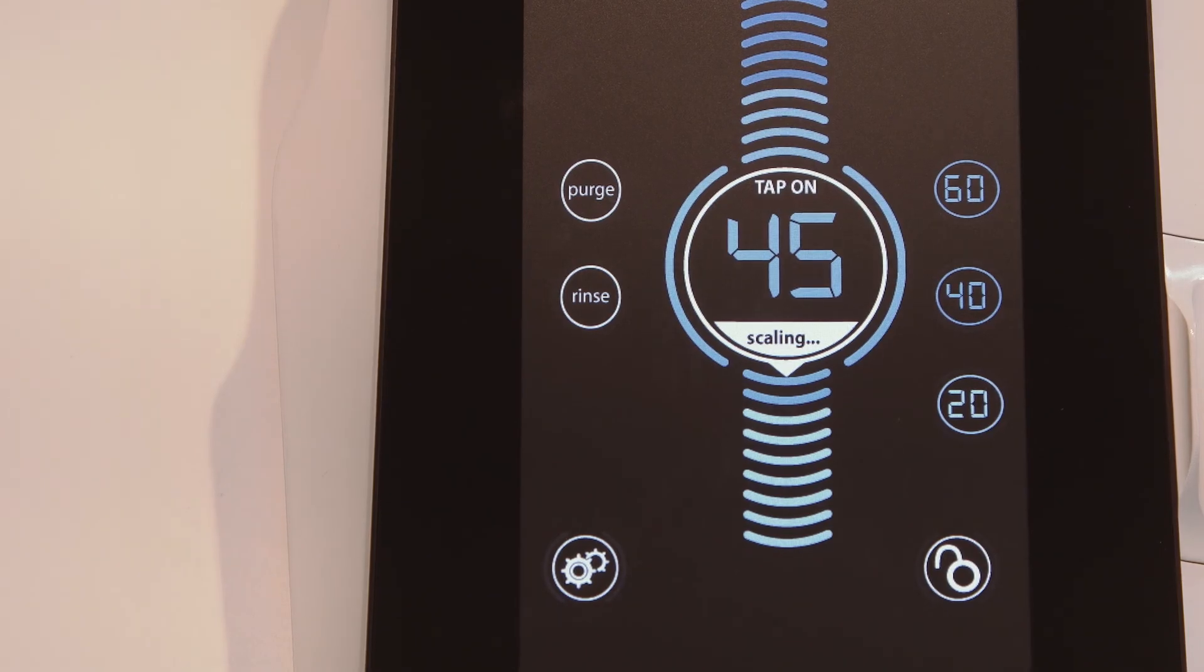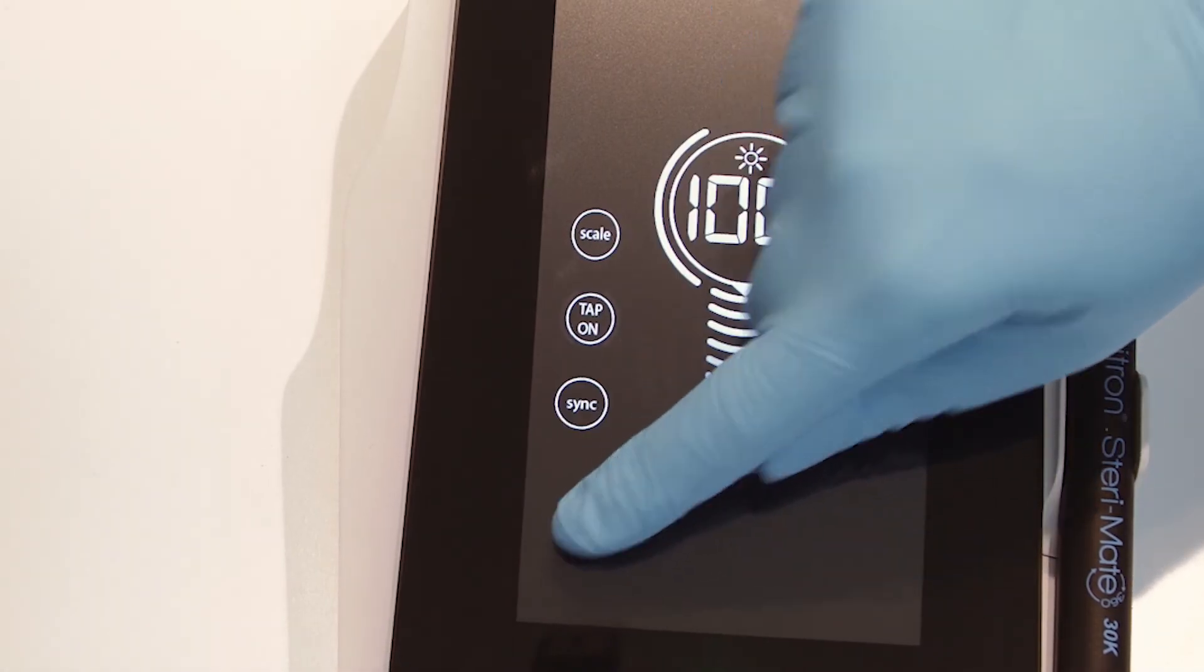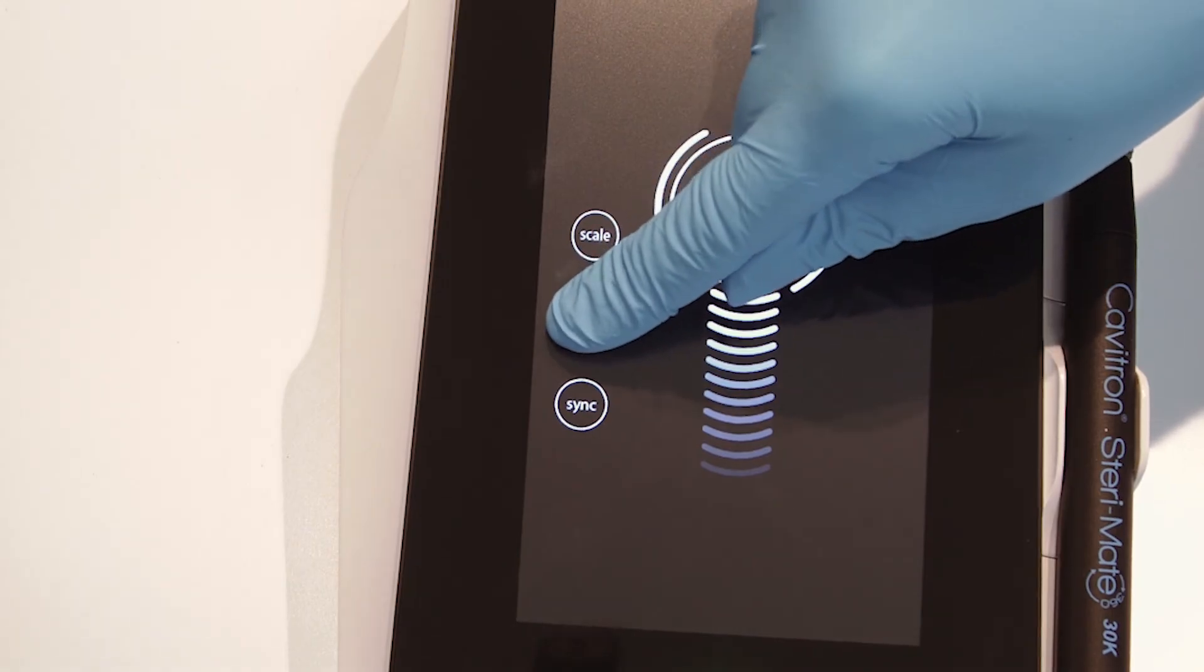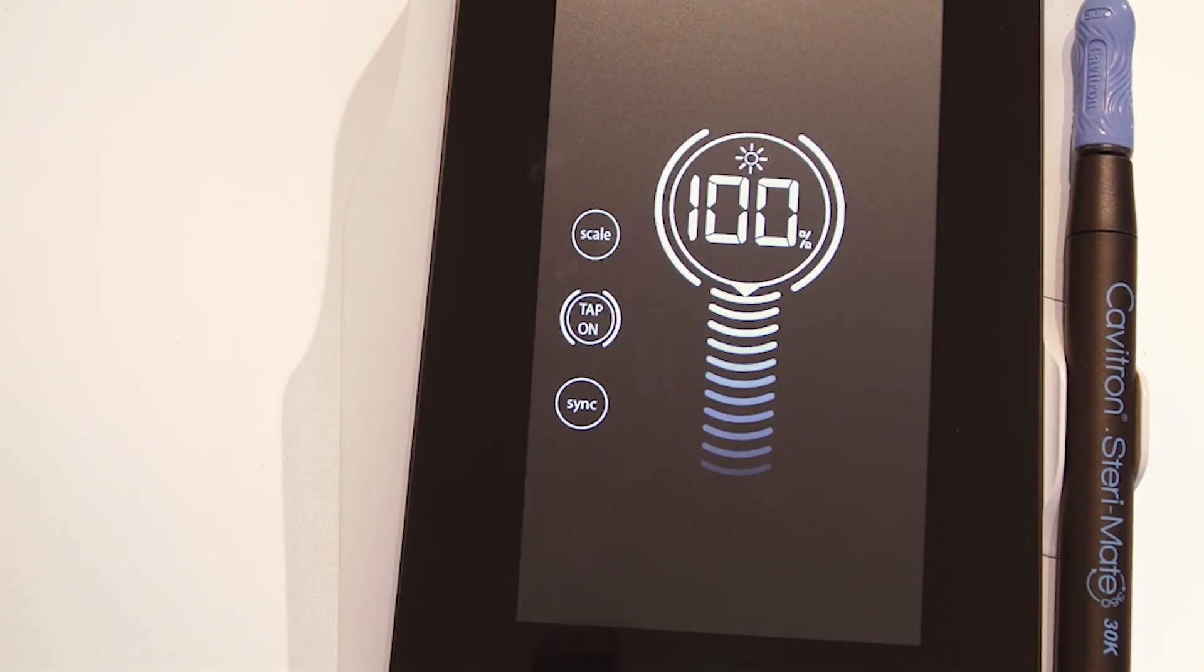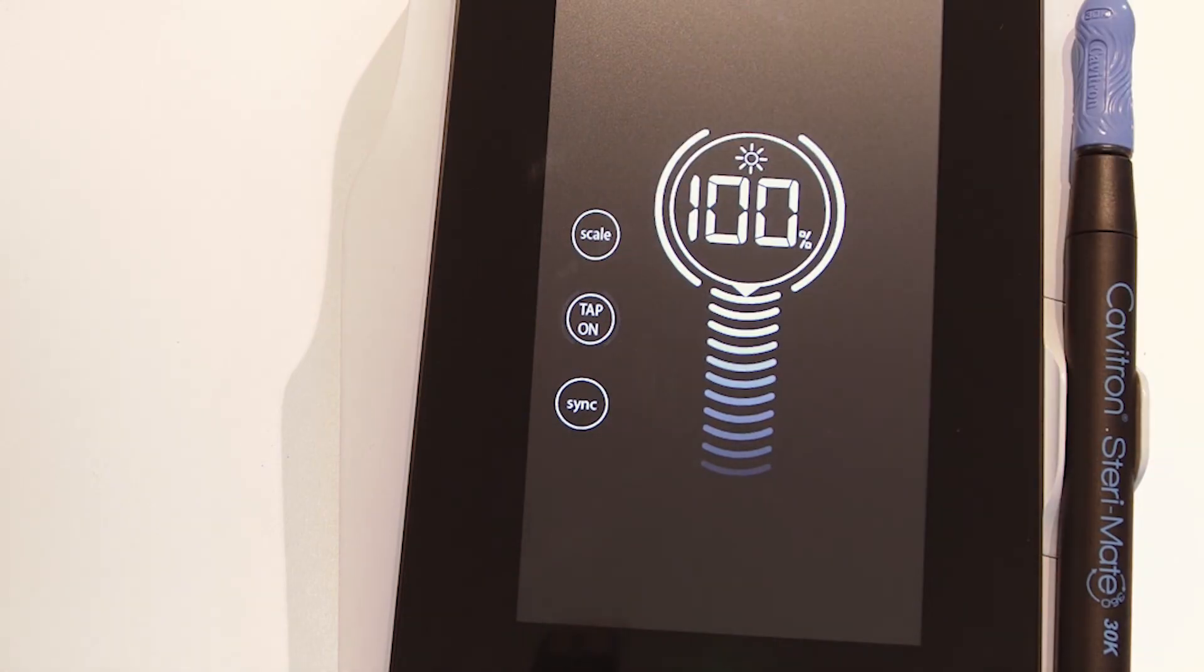This feature eliminates the need to hold down or pump the foot pedal, adding comfort to your routine. Enter the settings screen to enable or disable tap on. When parentheses are shown around the tap on icon, tap on is activated. If there are no parentheses visible, tap on is deactivated and the icon will be grayed out.